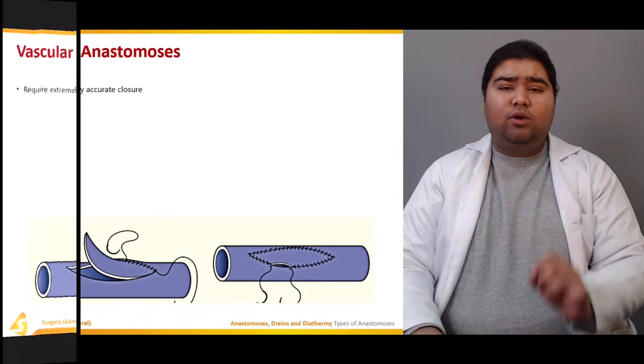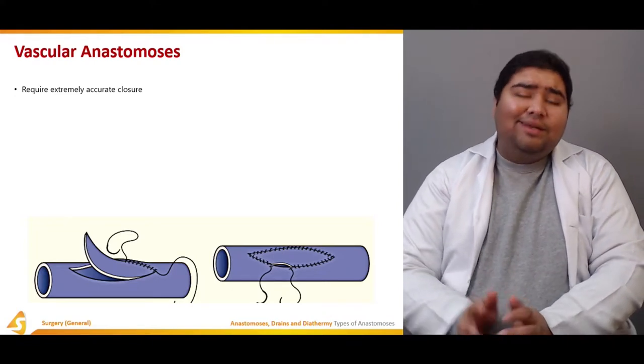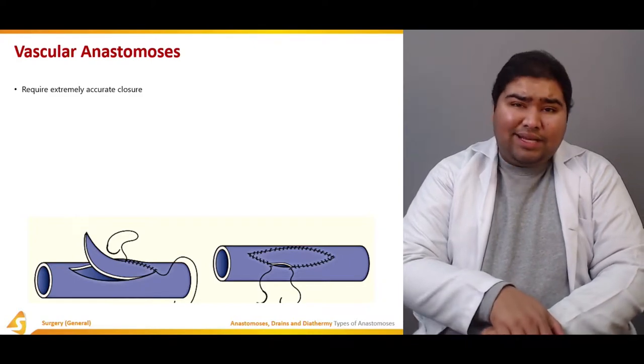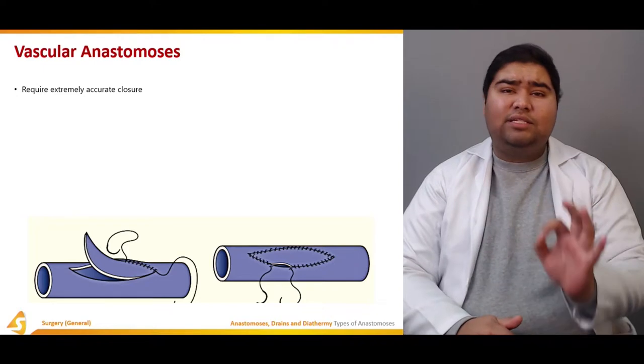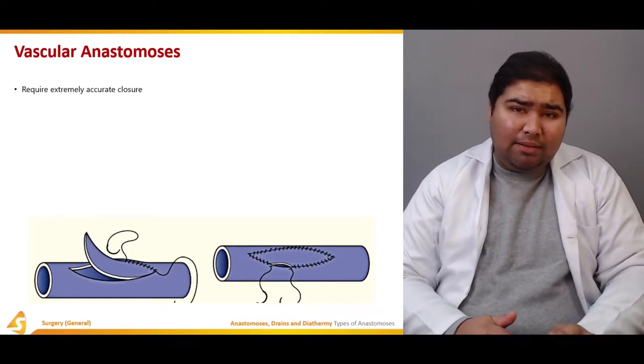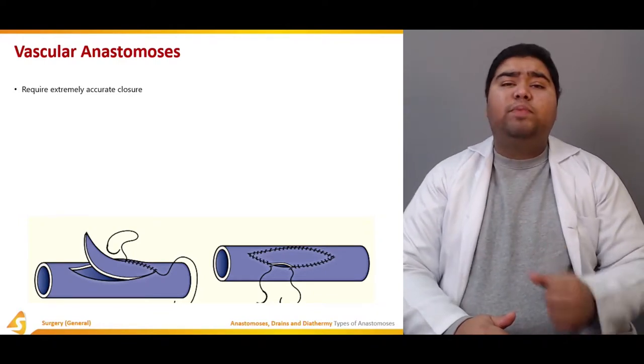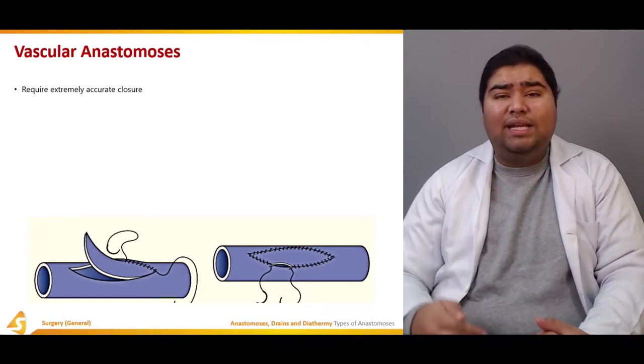Vascular anastomosis requires extremely accurate closure. Why is that? Vessels are under constant pressure - systolic and diastolic. Whatever you do, your vessel anastomosis should be watertight, should not leak blood, should not lose any material. It should be strong enough to sustain systolic pressures of even 180 to 190 millimeters of mercury.